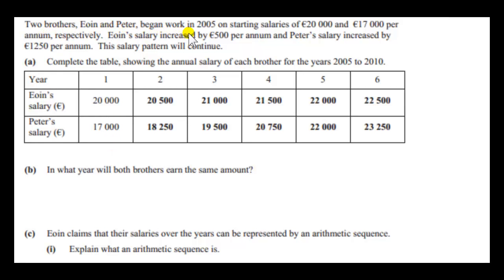Two brothers, Owen and Peter, began work in 2005 on starting salaries of €20,000 and €17,000 per annum respectively. Owen's salary increased by €500 per annum and Peter's salary increased by €1,250 per annum. This salary pattern will continue. So here we have a table, where year one means 2005. That was the year when Owen's starting salary was €20,000 and Peter's was €17,000.